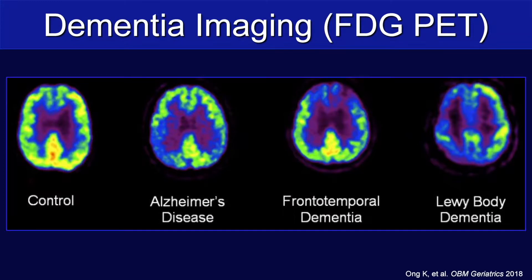Regions of cortical hypometabolism on FDG PET tend to co-localize with regions of cortical atrophy seen on structural brain MRI. In Alzheimer's disease, we see that temporal parietal pattern, as well as posterior cingulate gyri. In frontotemporal dementia, we see frontal and temporal involvement, and in dementia with Lewy bodies, it can be more diffuse, but in particular we're looking for hypometabolism in the bilateral occipital lobes.